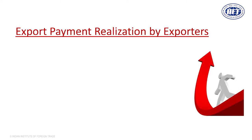When you do exports, you may face a situation where you need an extension of the stipulated payment period. The stipulated period is nine months. Suppose the buyer wants an extension of 10 to 20 days or one month — powers have been given to banks to extend this export realization period. If the extension required is for a longer period, then RBI approval is required, and your bank will help you obtain this extension.